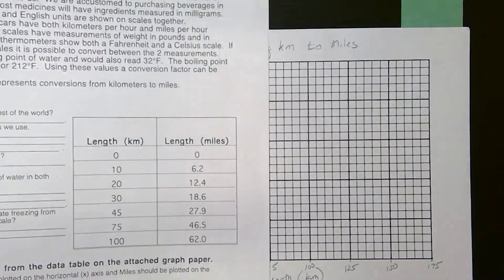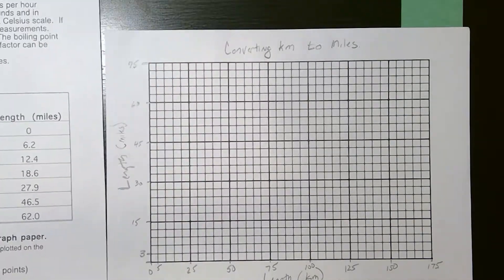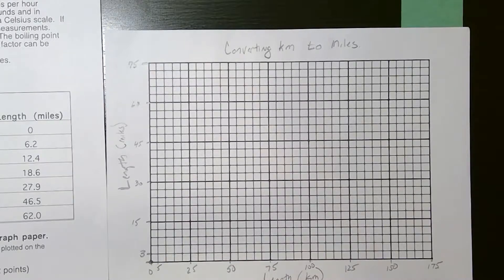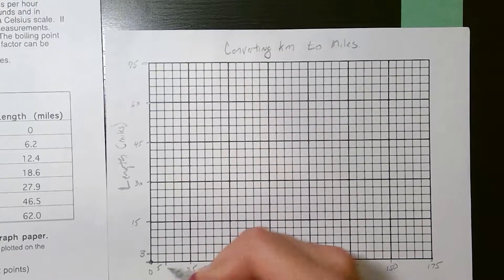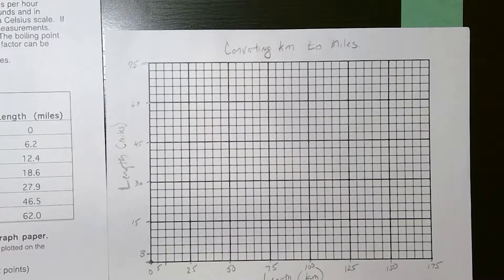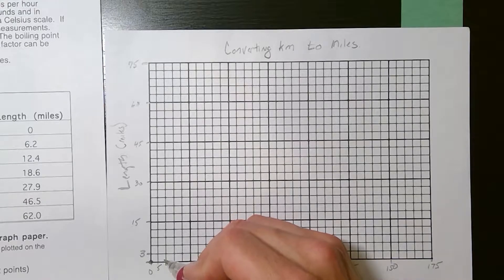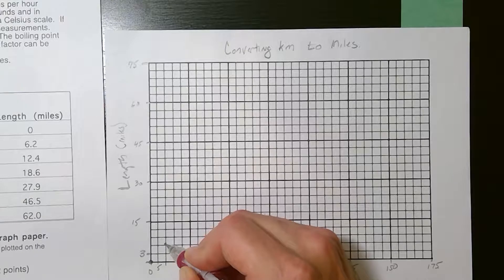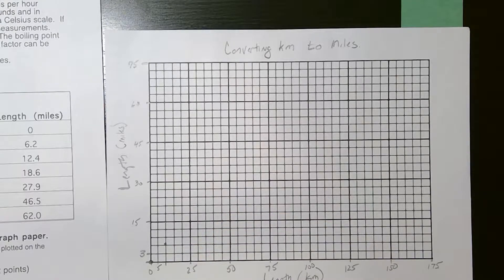Our data table is here. Obviously 0 kilometers is 0 miles. That point's going to be at the origin. A 10 kilometer race, you'd run 6.2 miles. So this is 3.6 and just a smidge above 6.